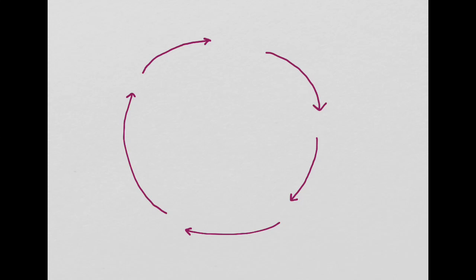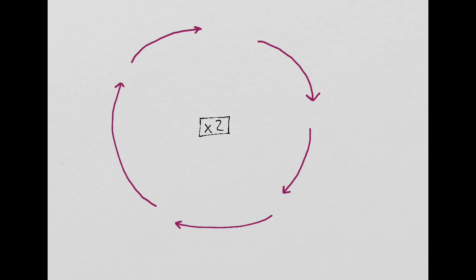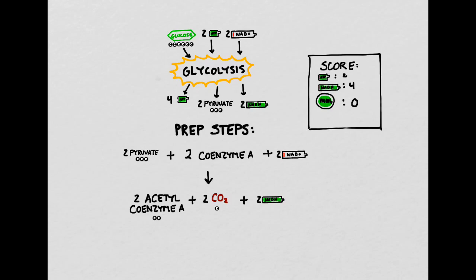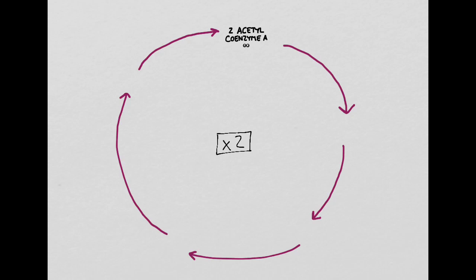Now we're going to move into the third step of aerobic respiration, which is called the Krebs cycle. For every molecule of glucose invested, the Krebs cycle will turn twice — this is why there's a times two in the middle. As we go through the Krebs cycle, you may notice some things similar to the Calvin cycle of photosynthesis, such as reinvesting certain parts of the cycle to keep it going. Remember that in the prep steps we made something called acetyl-CoA, which is going to become the first part of our chain.